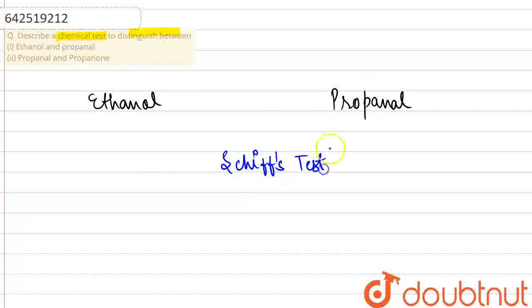So if we treat propanal in the Schiff's test, it will give a positive Schiff's test. If we treat ethanol, this will give a negative test because in the Schiff's test, propanal gives a reddish or pinkish appearance which confirms the presence of aldehyde.